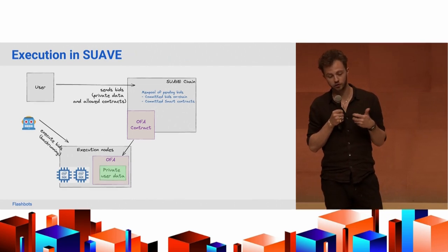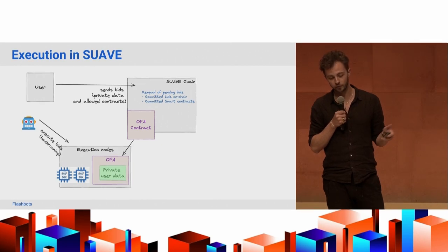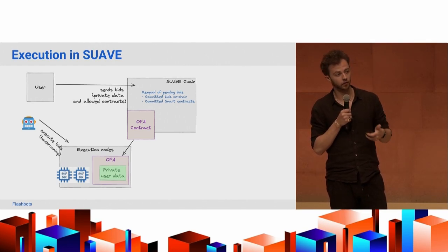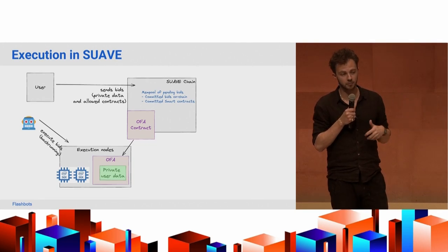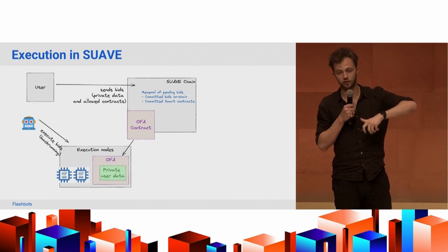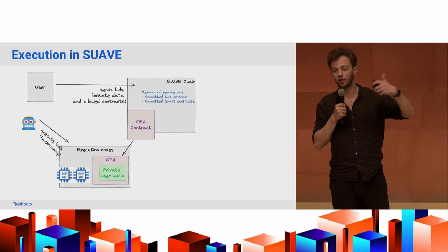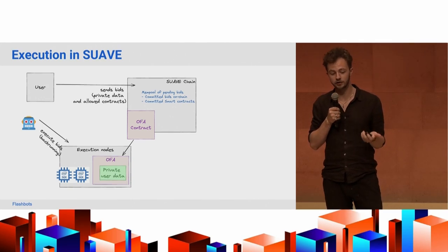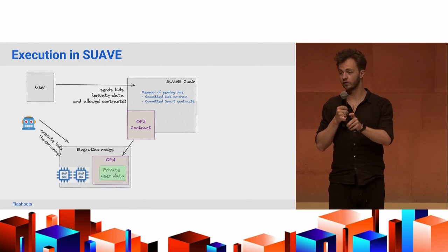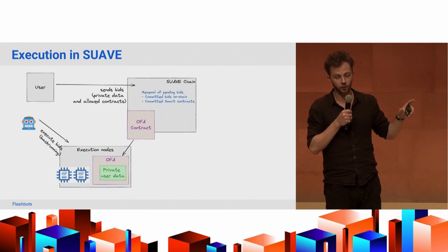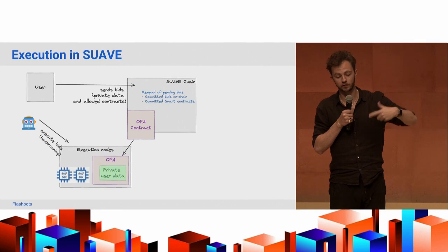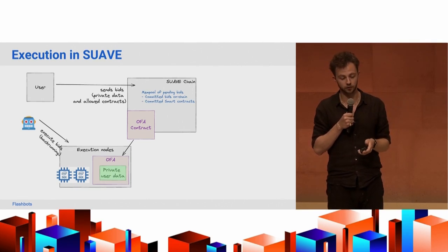To dig into execution nodes a bit more: the actual SUAVE chain itself stores what bids are pending. It doesn't store any private data — that's stored in the off-chain confidential data store — but it registers a user's bid, meaning a user saying 'I have this private transaction, I want it included on-chain.' It also registers contracts that developers have programmed their MEV applications in. Those contracts, when the user authorizes them, are executed within execution nodes, where an execution node reads the code of a smart contract and executes it accordingly.